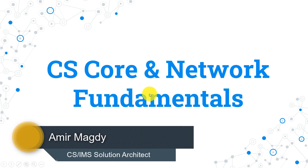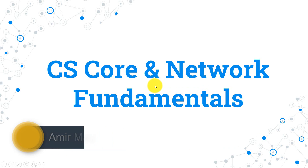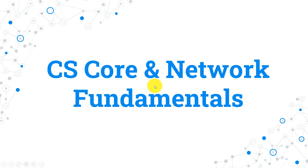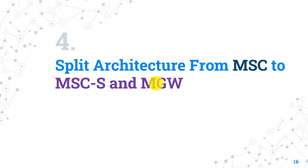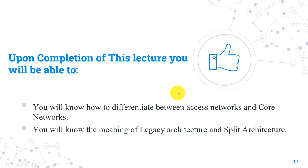Hello guys, welcome again to CS Core and Network Fundamentals course. Last lecture we talked about the CS Core Network components where the main node is the MSC Server. Let's now talk about the split architecture from MSC to MSC Server and Media Gateway. Upon completion of this lecture, you will be able to differentiate between access networks and core networks, and know the meaning of legacy architecture and split architecture, and how they are separated.